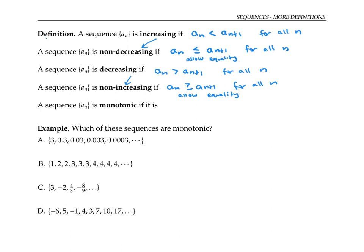If we were to graph n on the x-axis and a sub n on the y-axis, then increasing looks just like an increasing function, whereas decreasing would go down. Non-decreasing would go up possibly with some flat patches, and non-increasing would go down possibly with some flat patches.